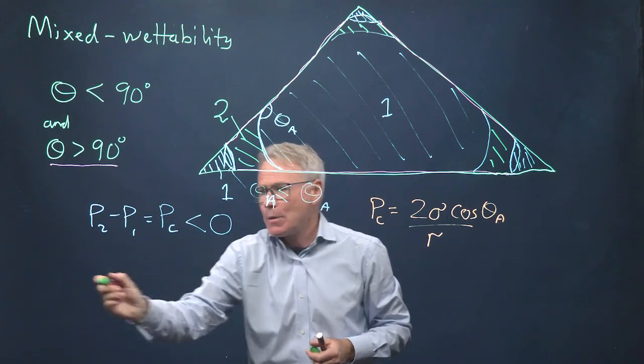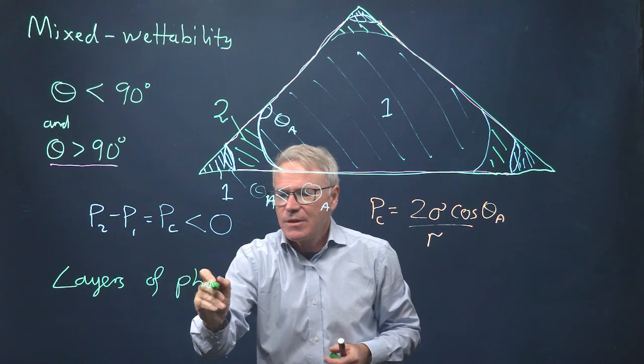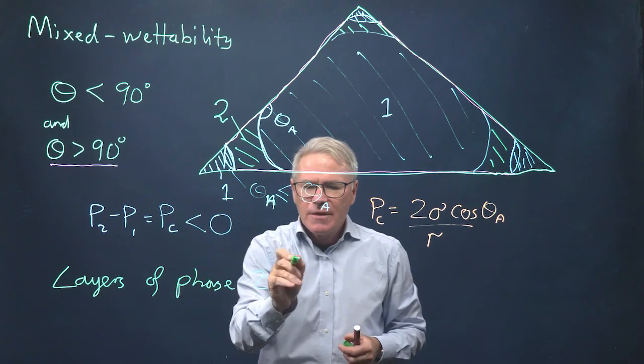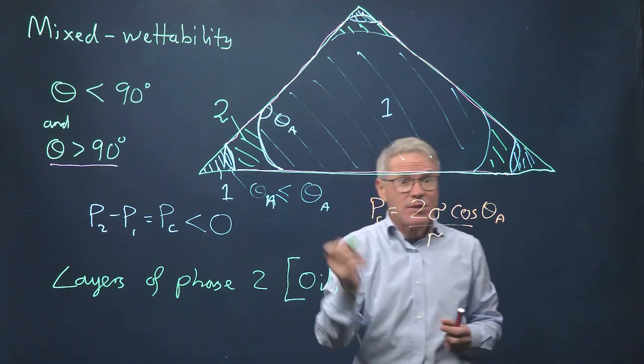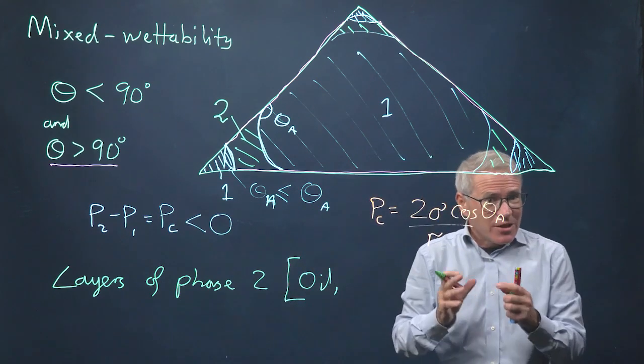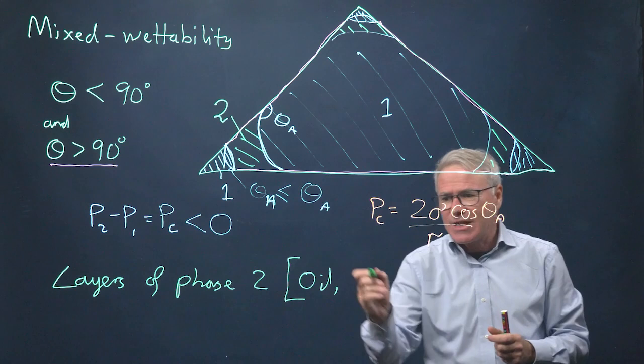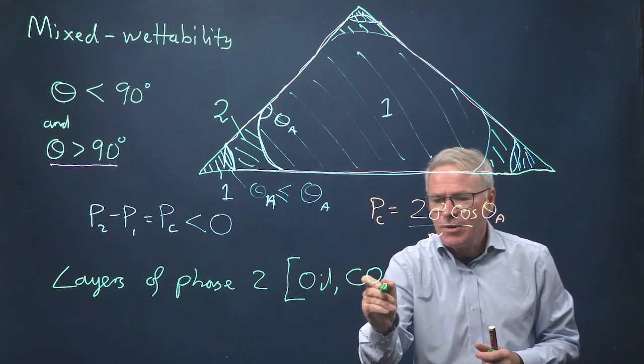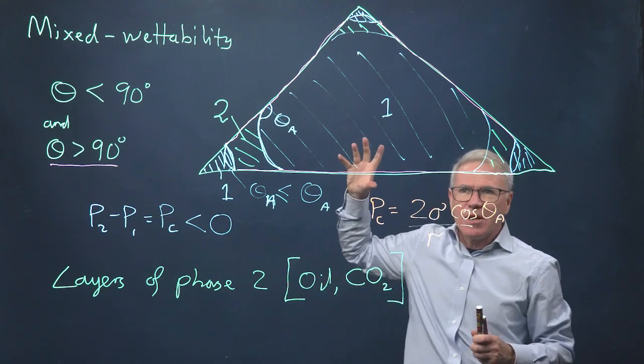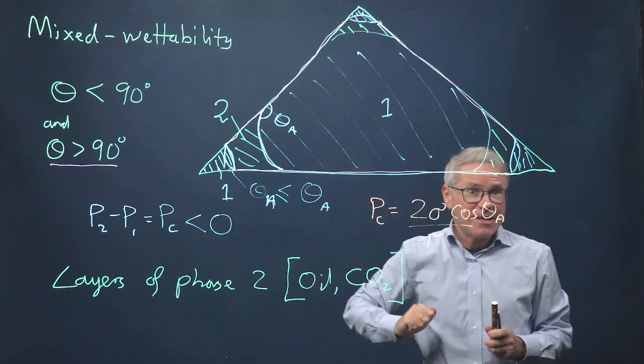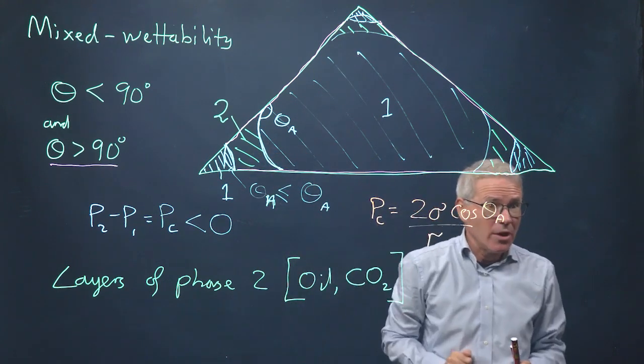We have layers of phase 2. And this can be oil. You can also see layers of, say, supercritical CO2, so CO2 at high pressures and temperatures which actually has a liquid-like density. So you can see this with CO2 as well. You can see here in the pore space, phase 1, the water, is in the center, also in the corners, and it leaves behind layers of the oil or gas.